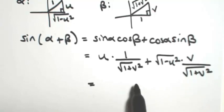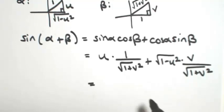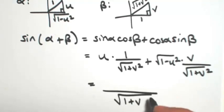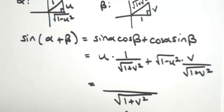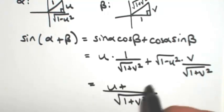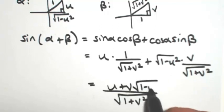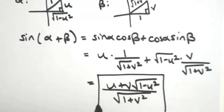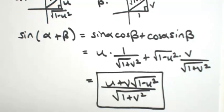Looking at this, we have a common denominator of the square root of 1 plus v squared. So we end up with u plus v times the square root of 1 minus u squared, all over the square root of 1 plus v squared. You could choose to rationalize it, but I'll leave it like that.